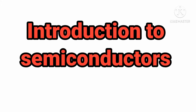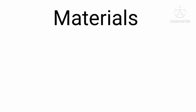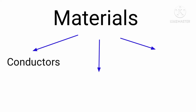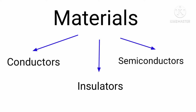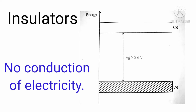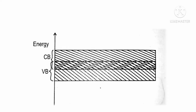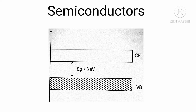What is a semiconductor and what are its properties? Materials are classified into three basic categories: conductors, insulators, and semiconductors. In insulators, the difference between the valence band and conduction band is too high for an electron to jump across. In conductors, the valence band and conduction band overlap. In semiconductors, they are separated by a moderate distance of less than three electron volts.